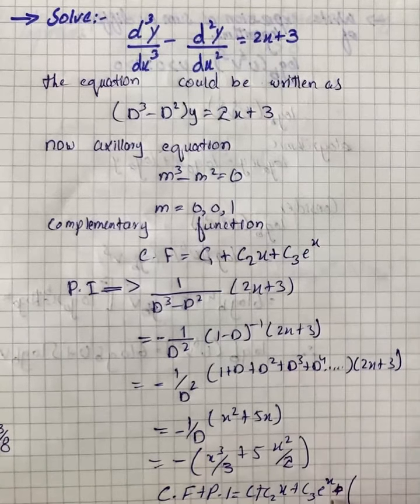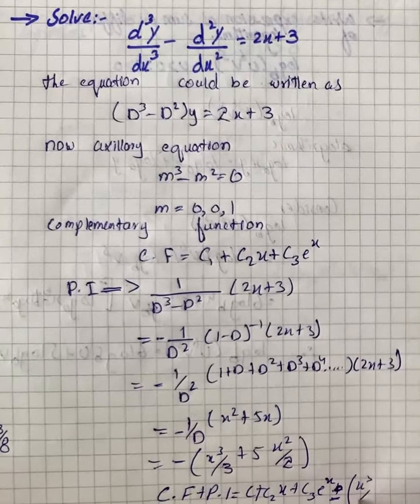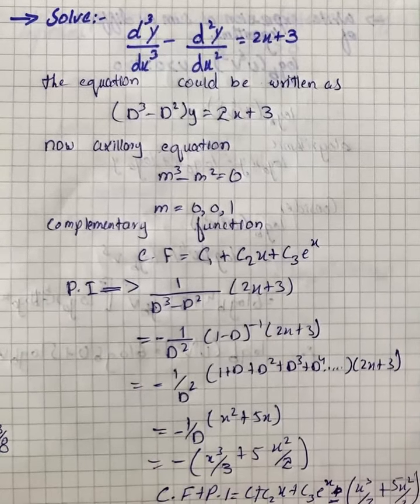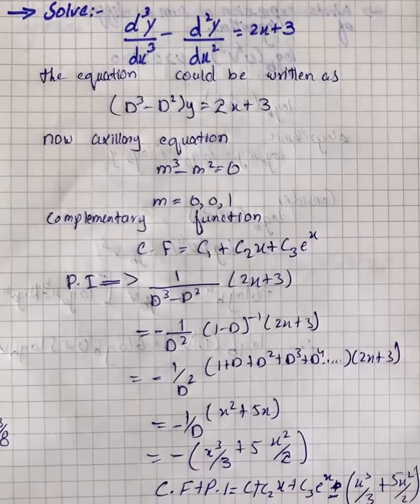Sorry, here it will come minus(-x³/3 + 5x²/2). That is our solution for the given question.